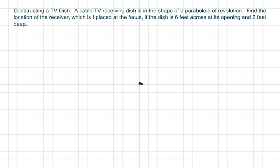Hi everyone, we're constructing a TV dish here and it's in the shape of a parabola of revolution. We want to find the location of the receiver, which is placed at the focus. If the dish is six feet across